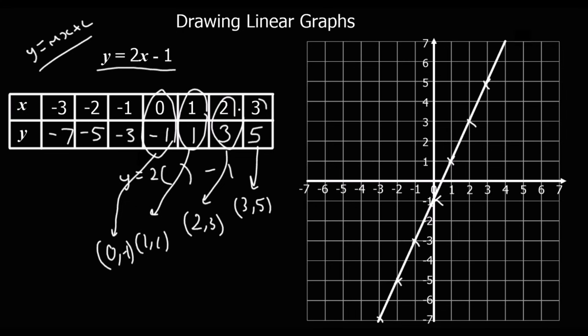If we had a point to the side, if we had a point up here, down here, we would know that we've made a mistake because it needs to form a nice straight line.